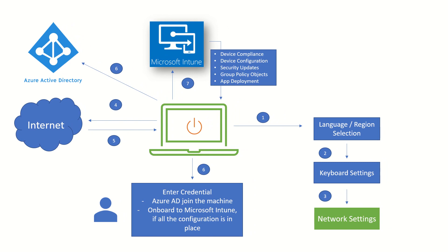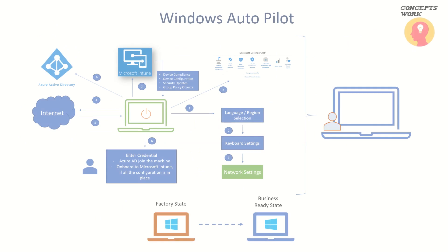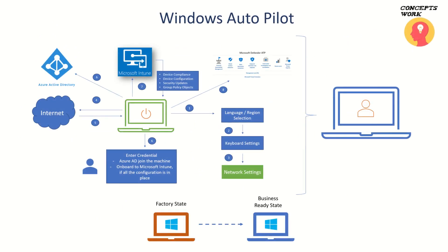Microsoft Intune has the capability to push device compliance policies, configuration, security patches, GPOs, and app deployment — capabilities equivalent to what we achieved with SCCM on-prem, now available through the endpoint manager portal at endpoint.microsoft.com. Since Intune is the endpoint manager, you can deploy settings required to onboard the machine to endpoint protection — which in Microsoft's case is Microsoft Defender ATP (MD ATP). A factory state device is now being transitioned to a business ready state device.